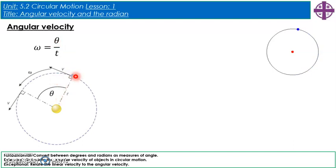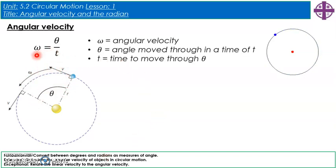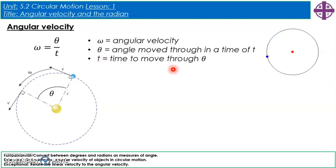Here we have an object moving around in a circle. It has travelled through an angle of theta, measured in radians, and we can work out its angular velocity from that. Omega — this Greek letter looks a bit like a w — is the angular velocity. Theta is the angle moved through in time t, measured in radians, and t in seconds is the time to move through that angle.